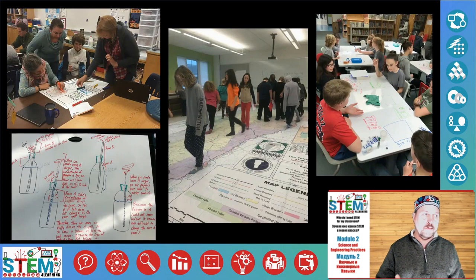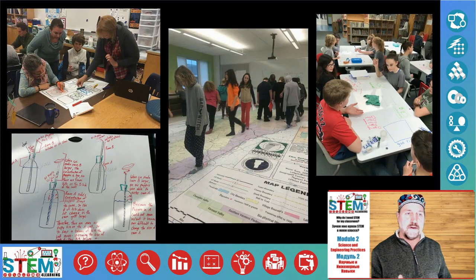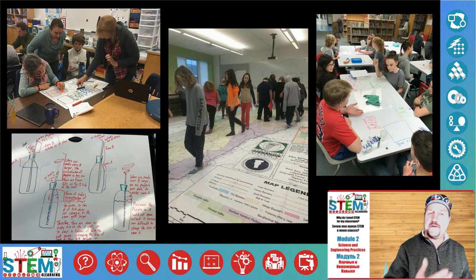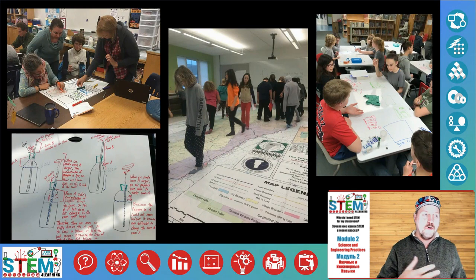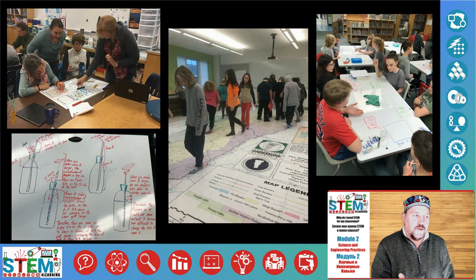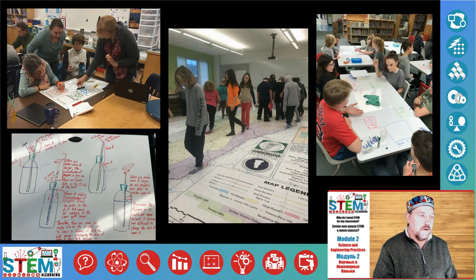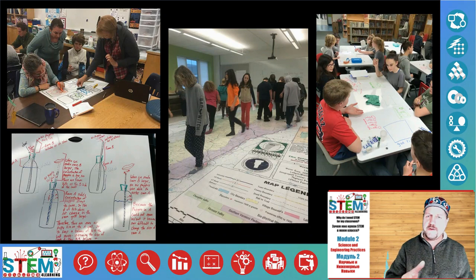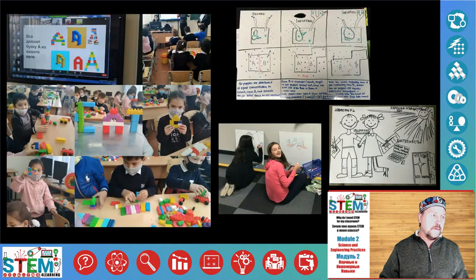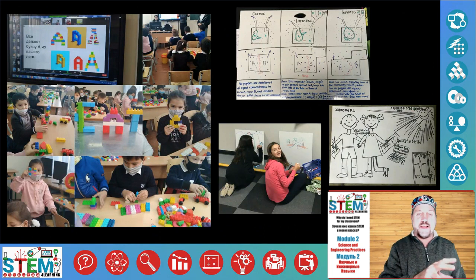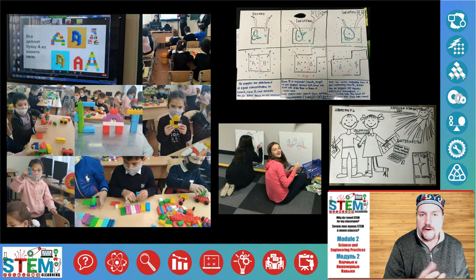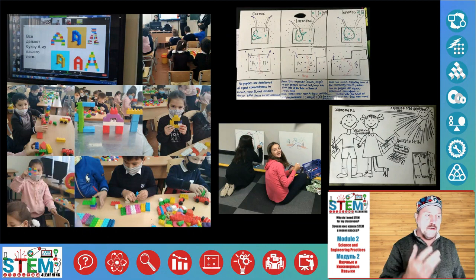We are constantly making models in science class — whether it's working on whiteboard tables, walking around a map (a map is just a model), or drawing models of what happened in class. The key question is: how can we explain something, and can it predict what's going to happen in the future?